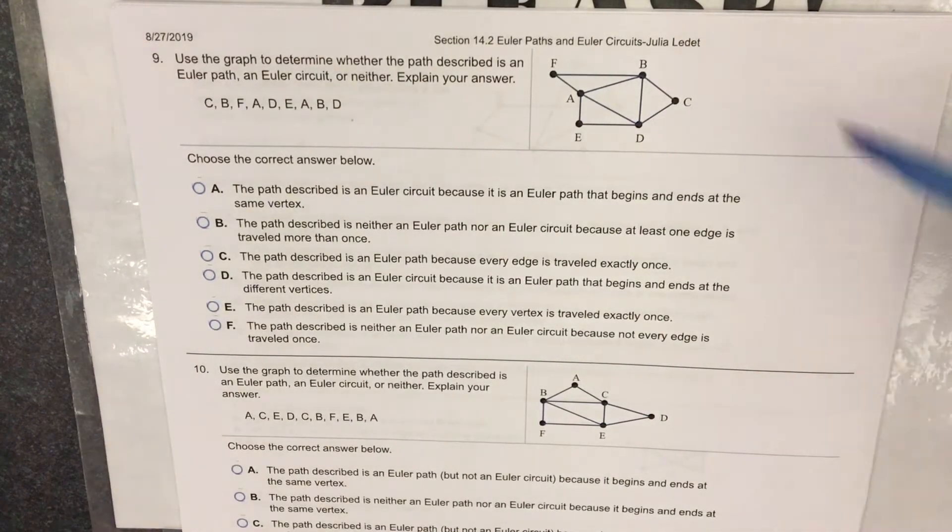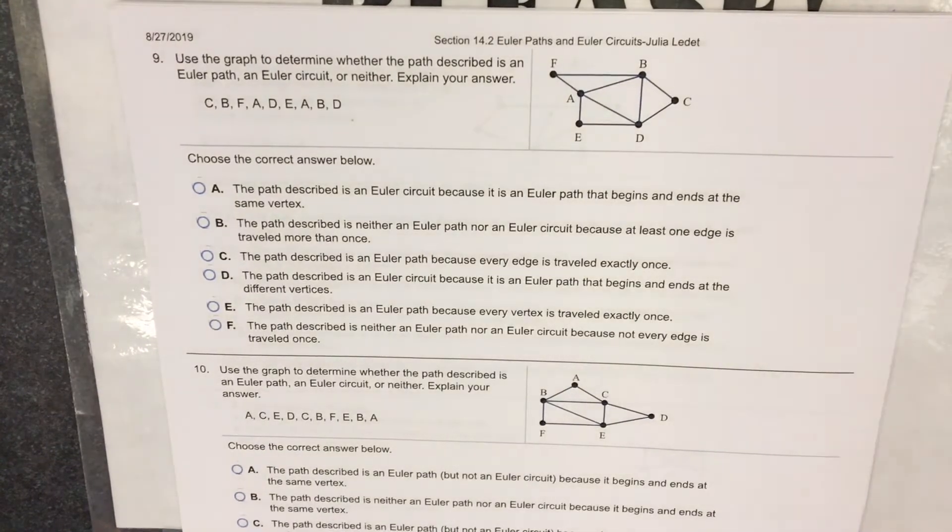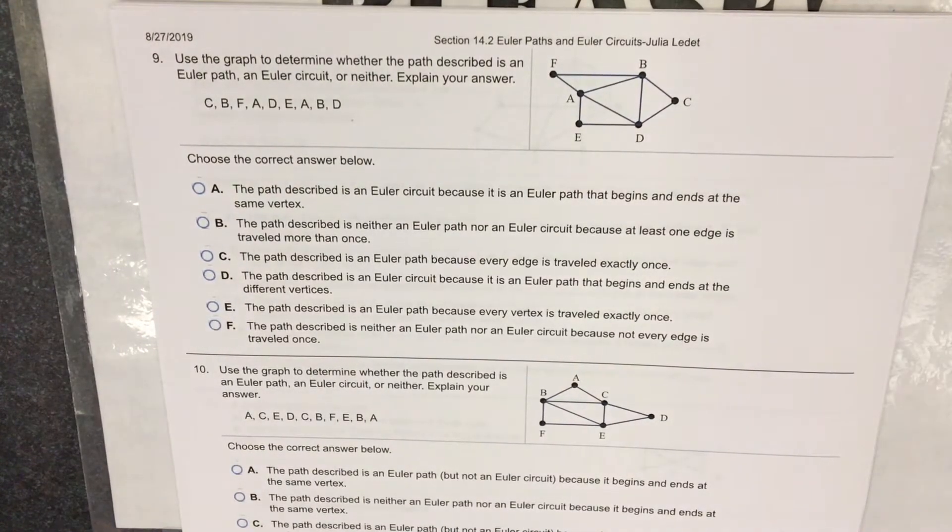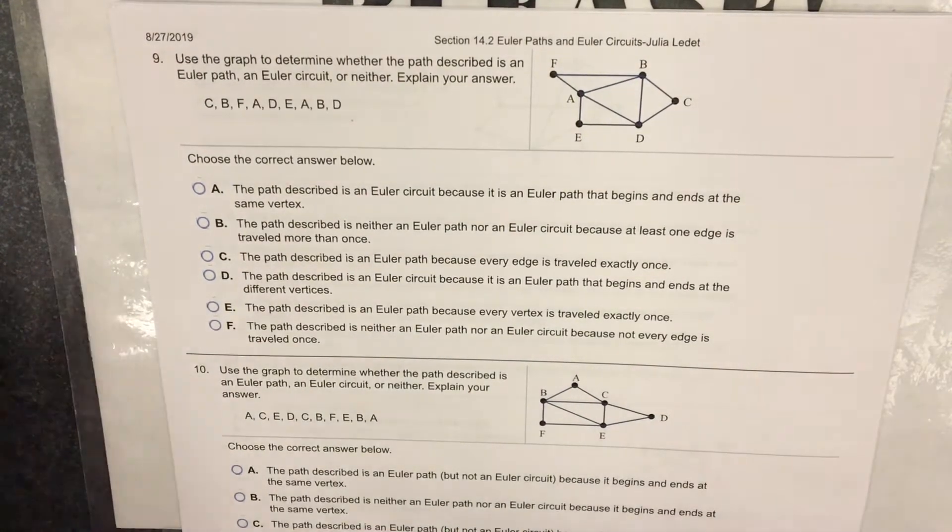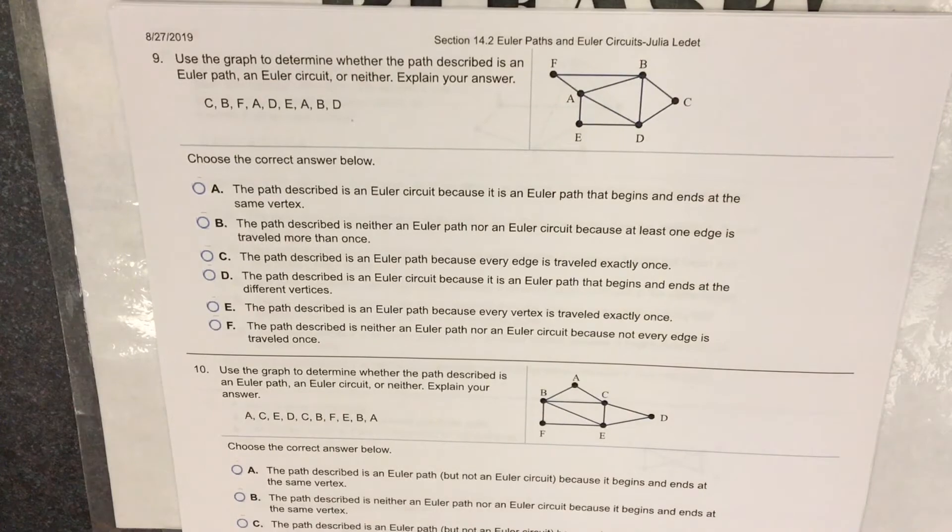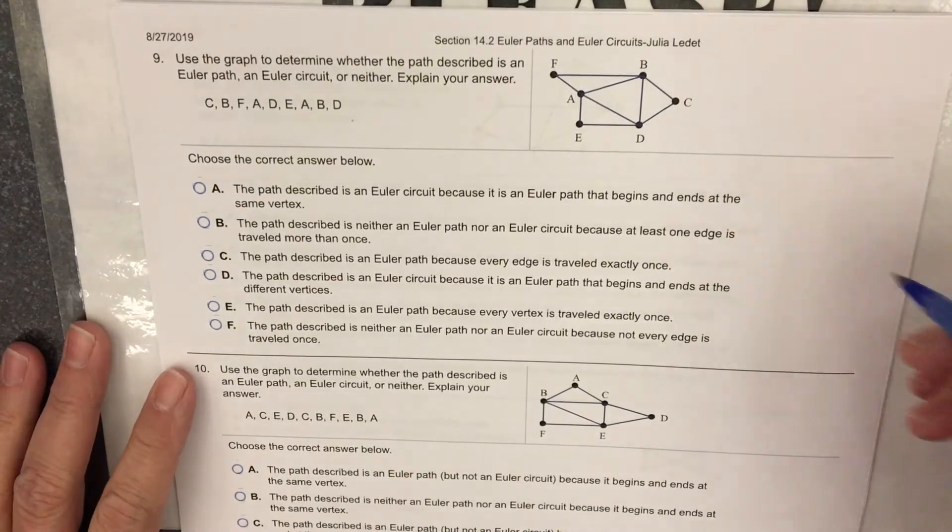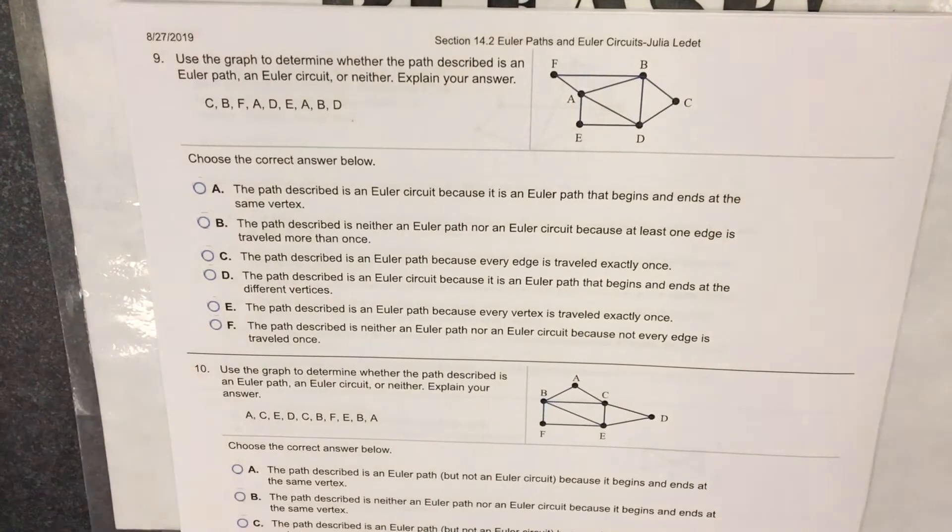I can look at the graph for number 9. I see it's connected. I can look at the degrees of the vertices, although I don't really need to for what they're asking me to do. But I'm going to look at that because that's something you should look at.